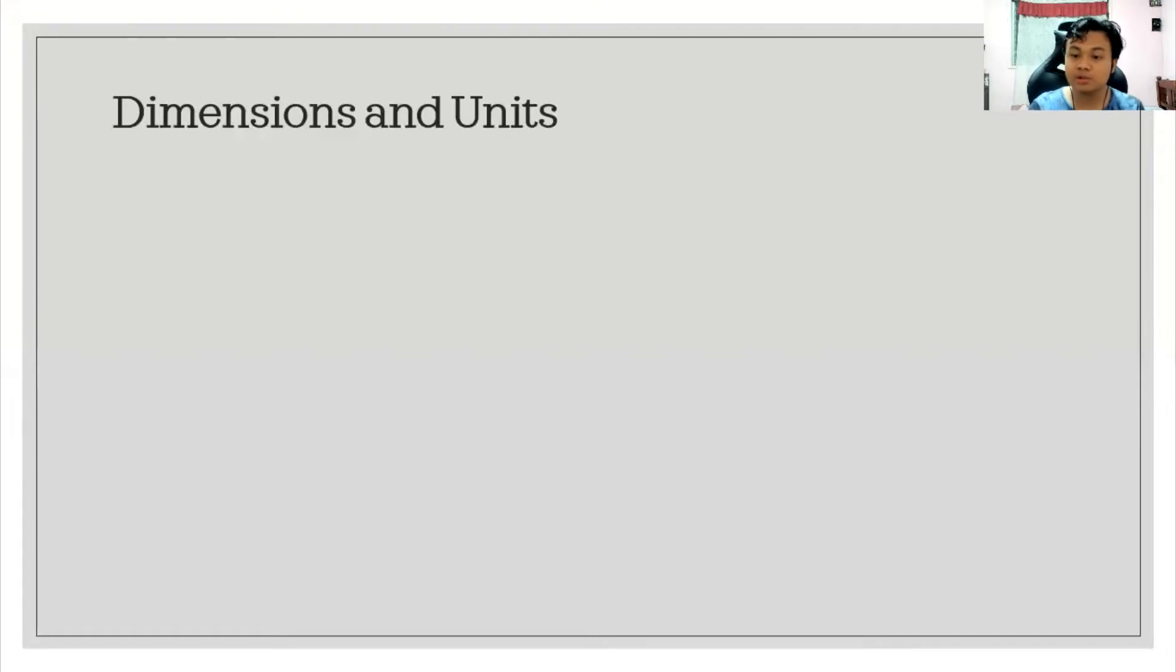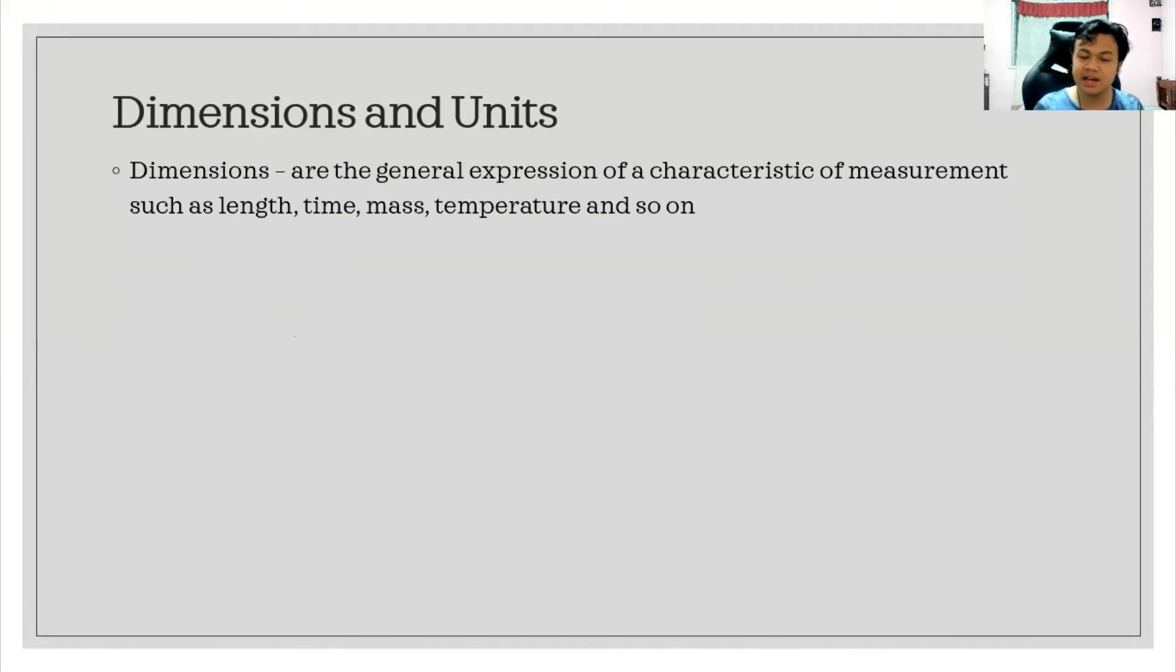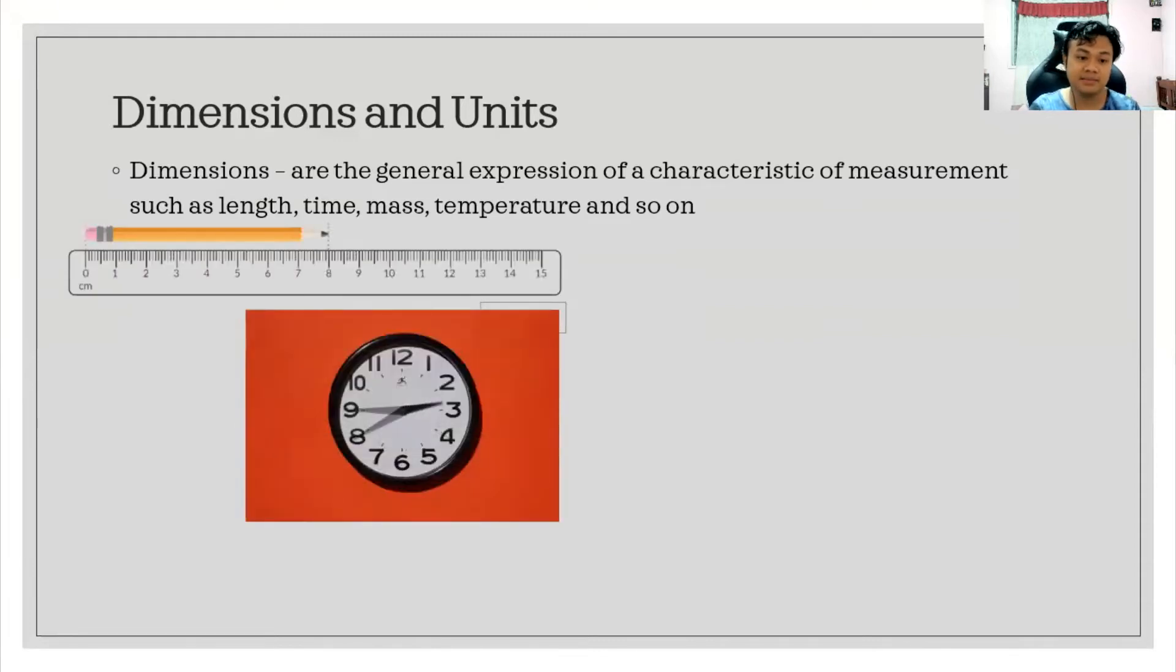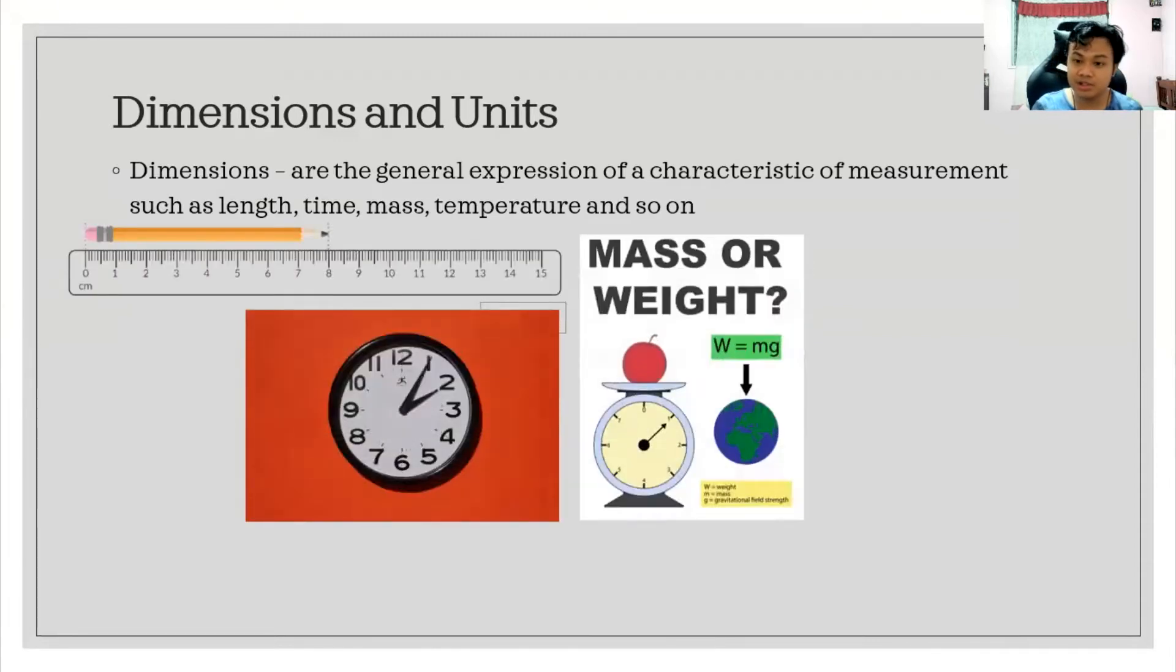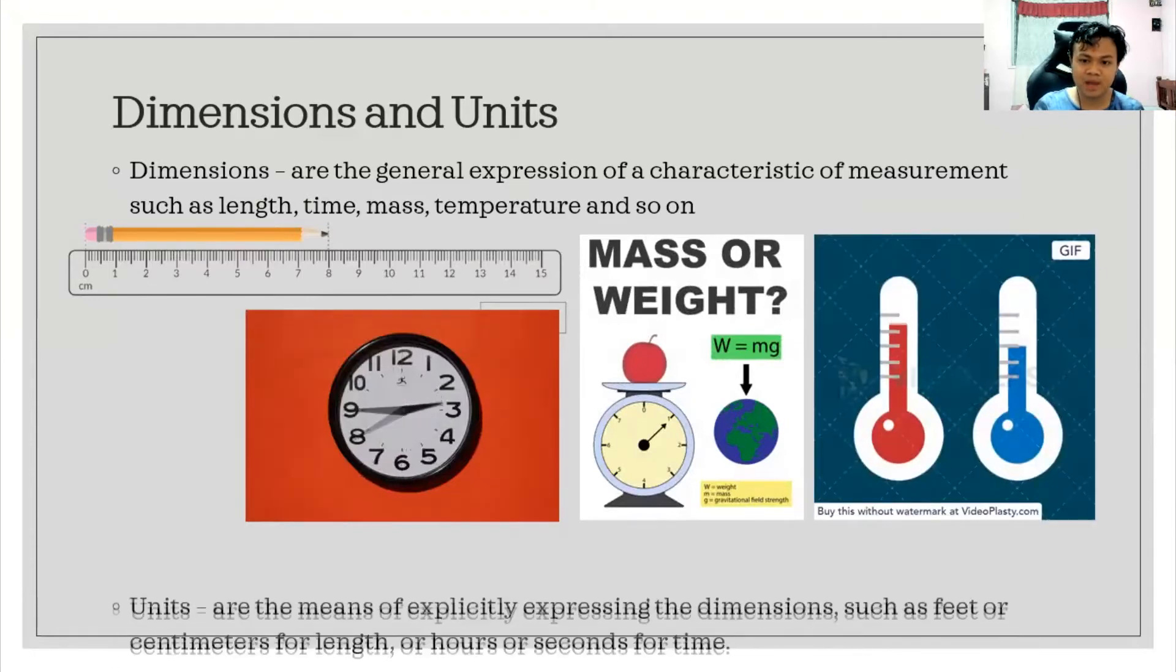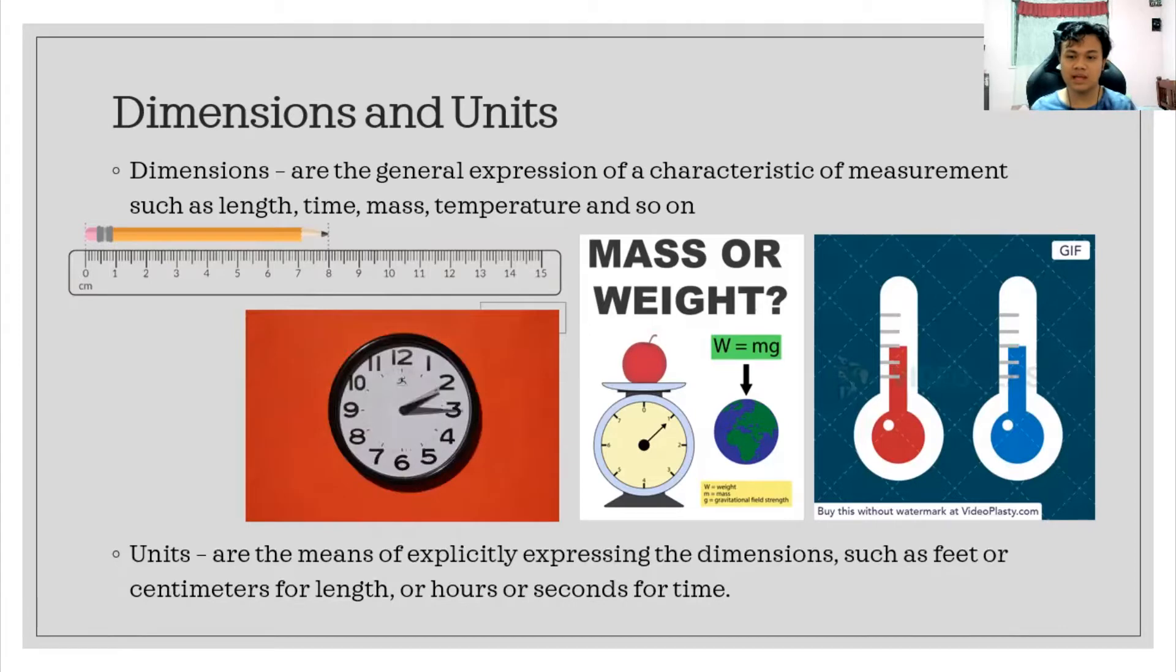So I will introduce to you dimensions and units. Although this is very simple, maybe taken for granted, but if you're in chemical engineering, it is really a big deal in your dimensions and units. First, dimensions are general expression of a characteristic of measurement such as length, time, mass, temperature, and so on. And how you record this, how the unit of these characteristics of measurements, we call them units.